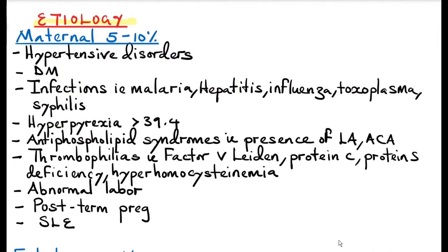The causes of intrauterine fetal death can be classified according to maternal causes, fetal causes, placental causes, iatrogenic, or idiopathic. Maternal causes account for about 5 to 10 percent of all the causes. These include hypertensive disorders like pregnancy-induced hypertension, preeclampsia, or chronic hypertension, diabetes mellitus, as well as infections like malaria, hepatitis, influenza, toxoplasmosis, syphilis.